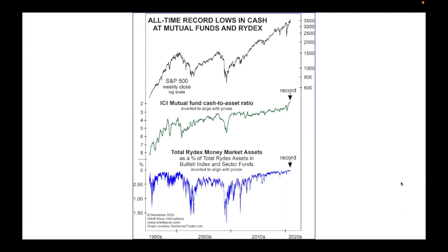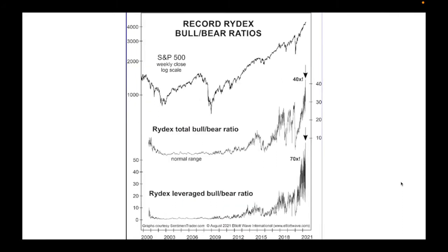We've got all-time record lows in cash at mutual funds. The most important thing, even if you don't fully understand it, is to compare it to the prior historic peaks. We've got the ICI mutual fund cash-to-asset ratio showing funds not holding cash but having assets instead — they're all in to this market. The total RYDEX money market assets as a percentage of total RYDEX assets in bullish index and sector funds is also showing another record, as people are positively positioned for the market to go up, including through leveraged instruments.